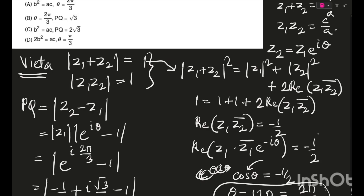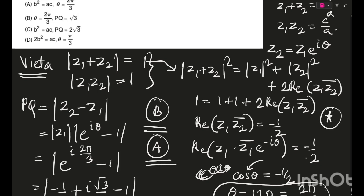So θ = 2π/3 and PQ = √3 — option B is correct. Option A states b² = ac: since |a| = |b| = |c| = 1, taking modulus on both sides gives 1 = 1, so option A is also correct. Both A and B are correct answers. That's it for today — three questions from this Allen SRG paper. Like, share, subscribe, and join my Telegram discussion chat for JEE preparation.